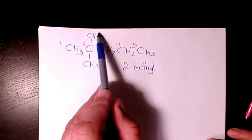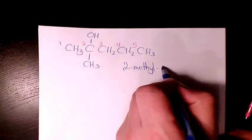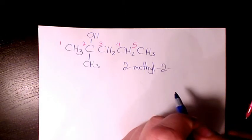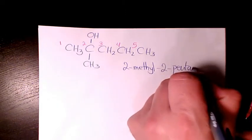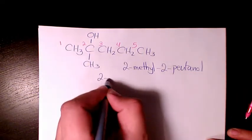And the hydroxyl group is on the second carbon, and we can call it two. And because we have five carbons, we call it 2-methyl-2-pentanol. We can also call it 2-methylpentan-2-ol.